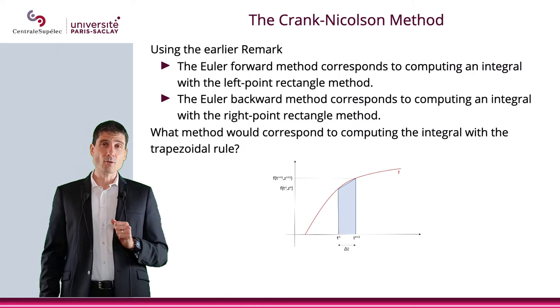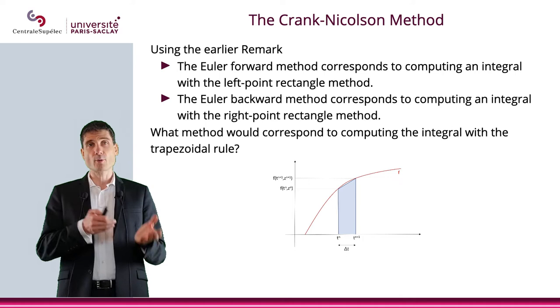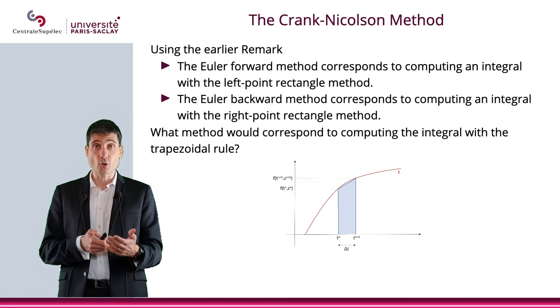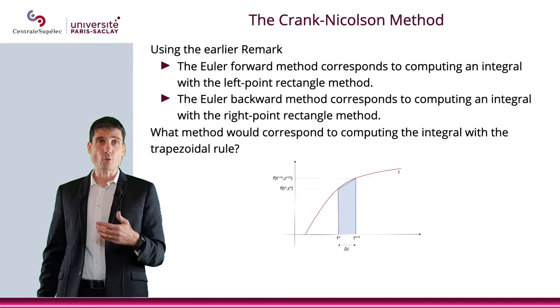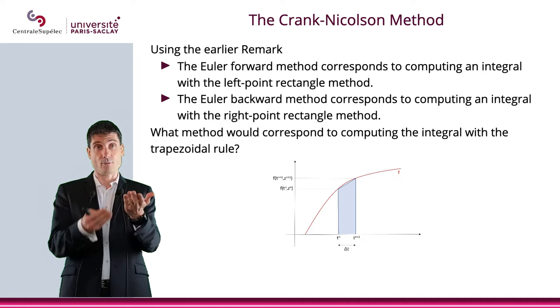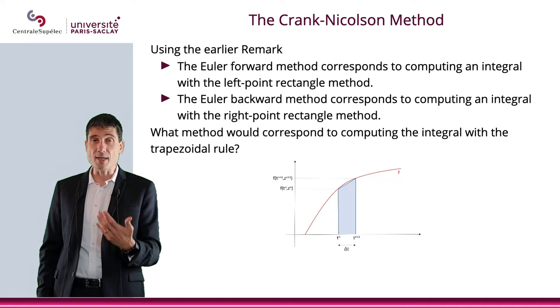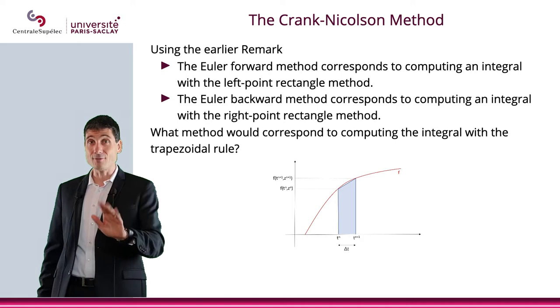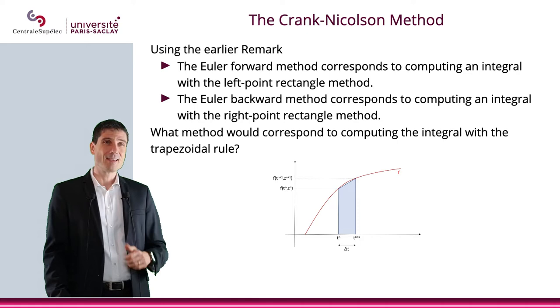Going back to the earlier remark, we had the Euler forward method, which corresponds to computing the integral with the left point rectangle. The Euler backward method corresponds to computing the integral with the right point rectangle. And we also saw the RK2, which was like doing the midpoint. What would be the method corresponding to the integral with the trapezoid rule, which we know is going to give better results than the rectangles? At this point, you can stay with us or stop the video and try to figure it out by yourself.